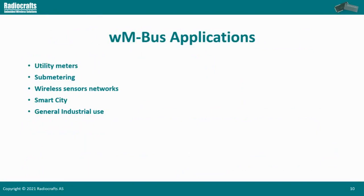M-Bus is very widely used in the metering market, but because of its simplicity, robustness, reliability, security, and low power consumption — all very attractive characteristics — it has also been adopted in wireless sensor networks, smart cities, and general industrial use.